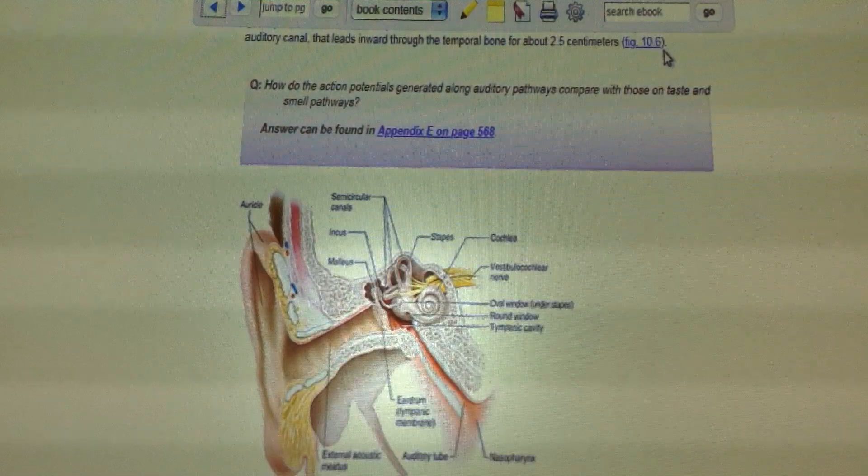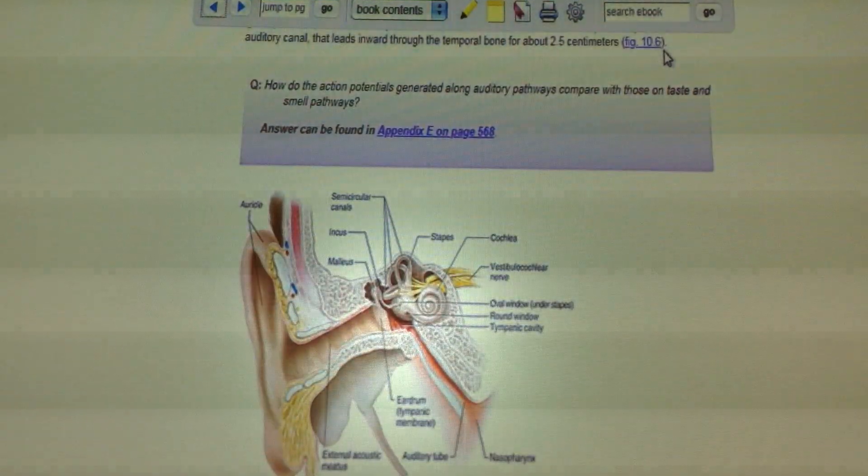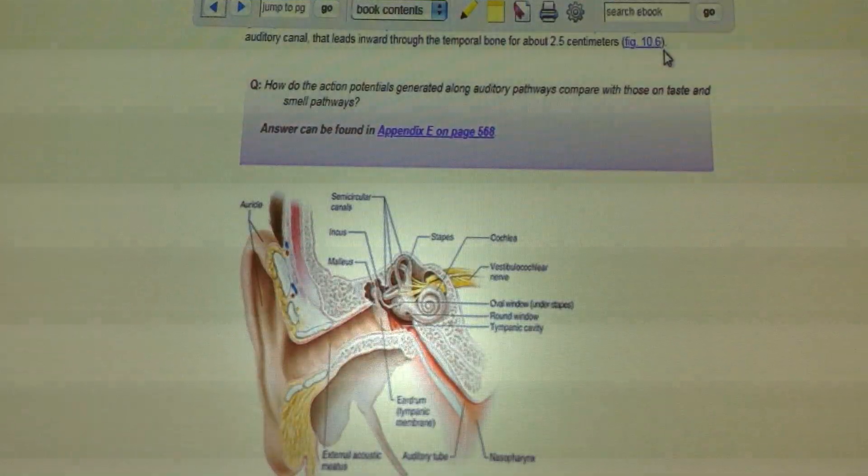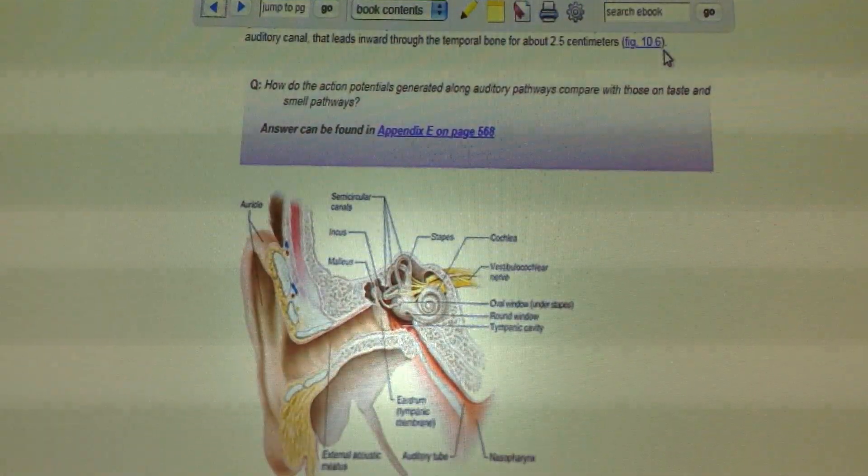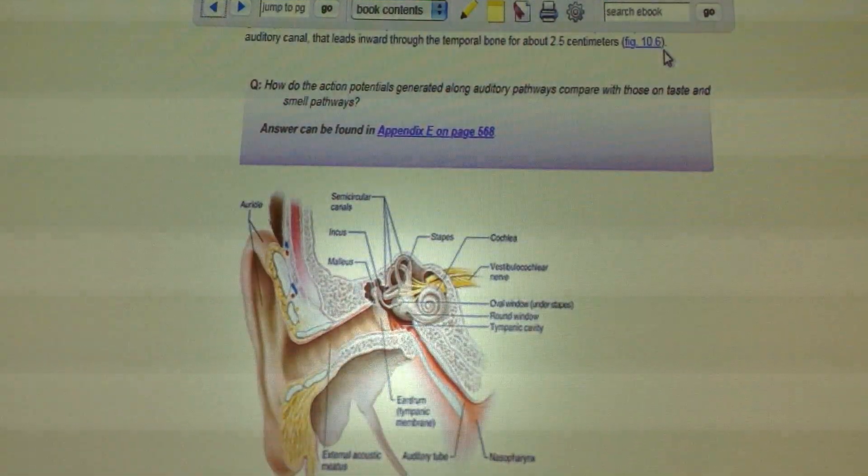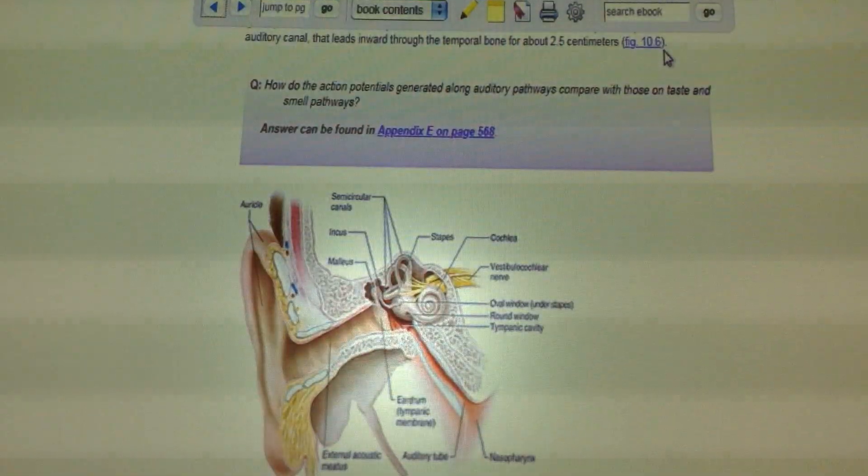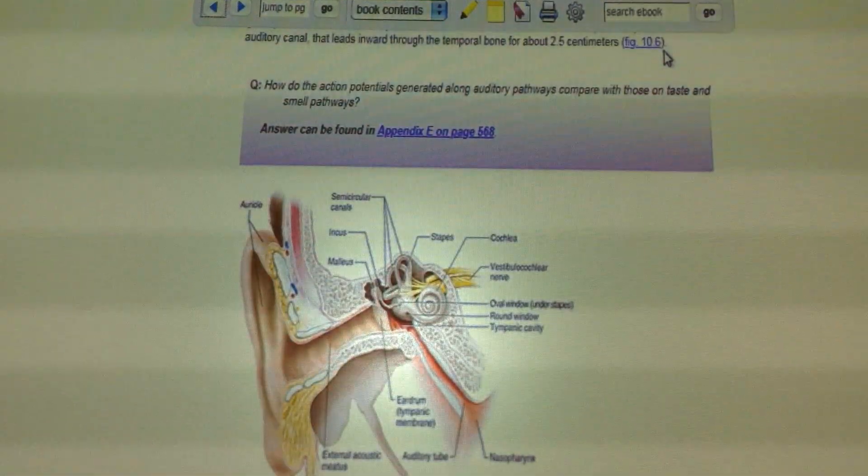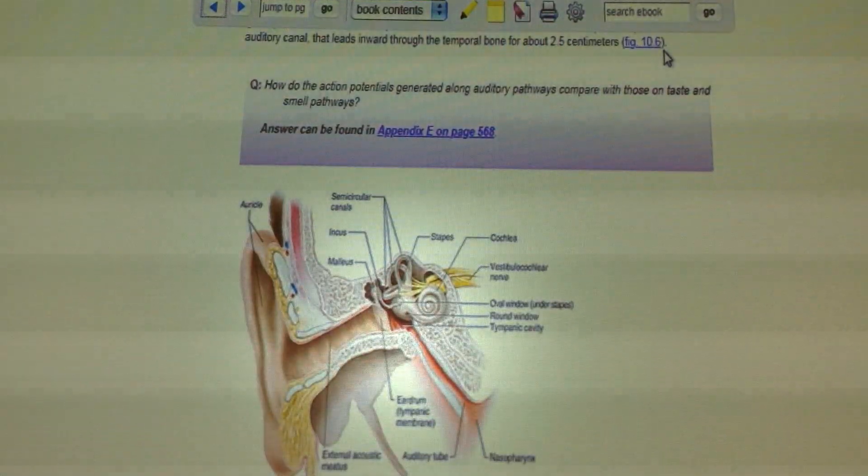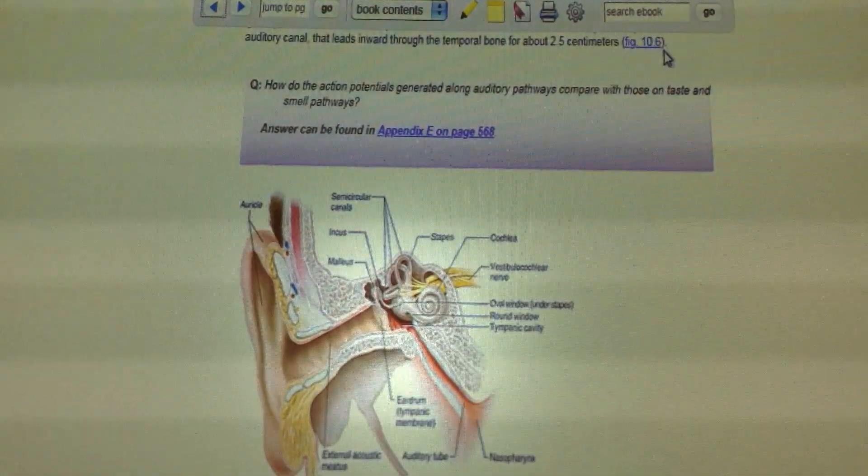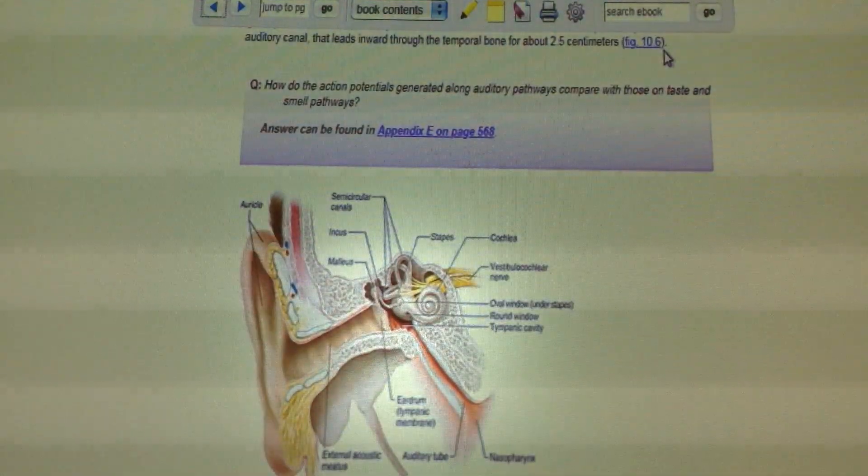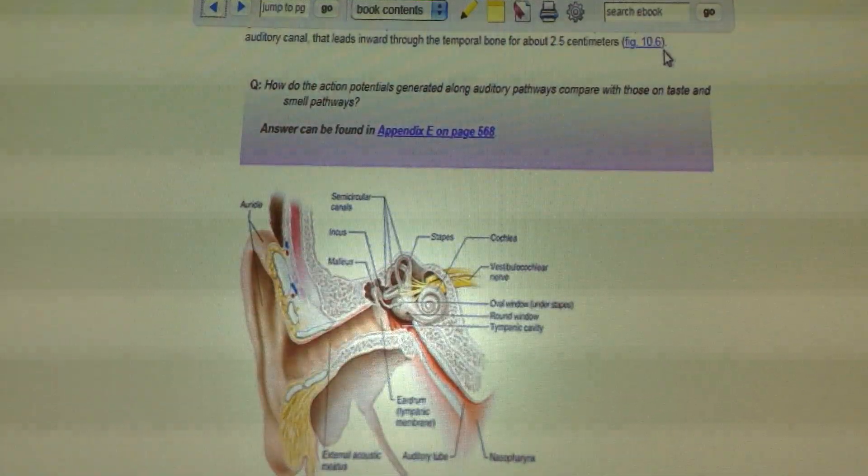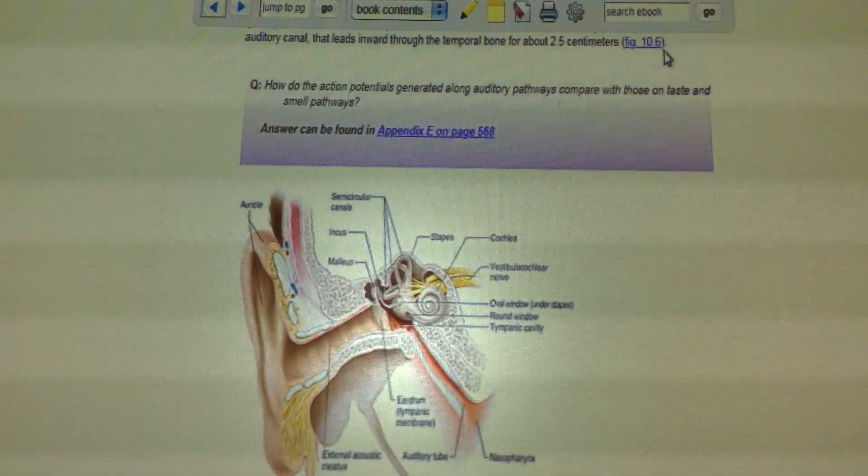You need to realize the brain only speaks one language. It speaks nerve impulses, also called action potentials. All the world has numerous stimuli. We have light, we have sound, we have taste, we have touch. Some of the homework dealt with the sense of taste and some of the pressure and temperature receptors that our skin has. Well, anyway, all of that, all of that variety of external stimuli, we could throw in heat and cold in there as well, all of those have to be converted by the sense organs into the common language of the nervous system. And again, the common language of the nervous system is a nerve impulse, which we will be referring to as an action potential.